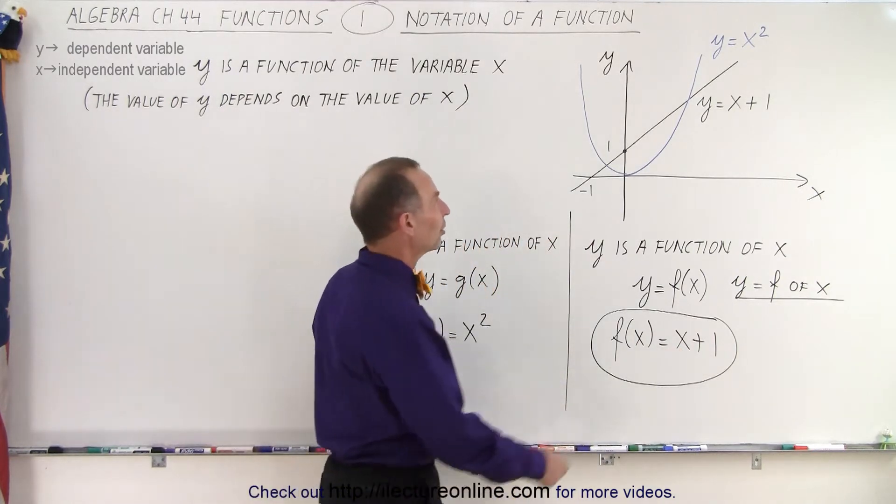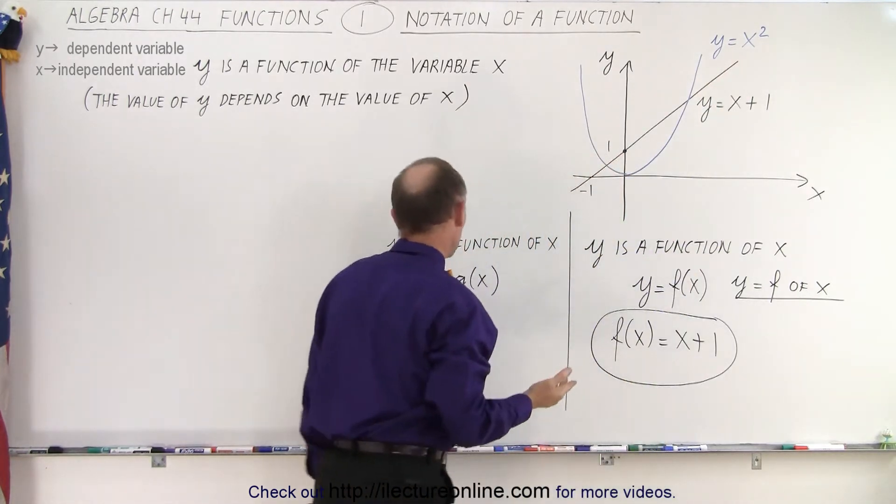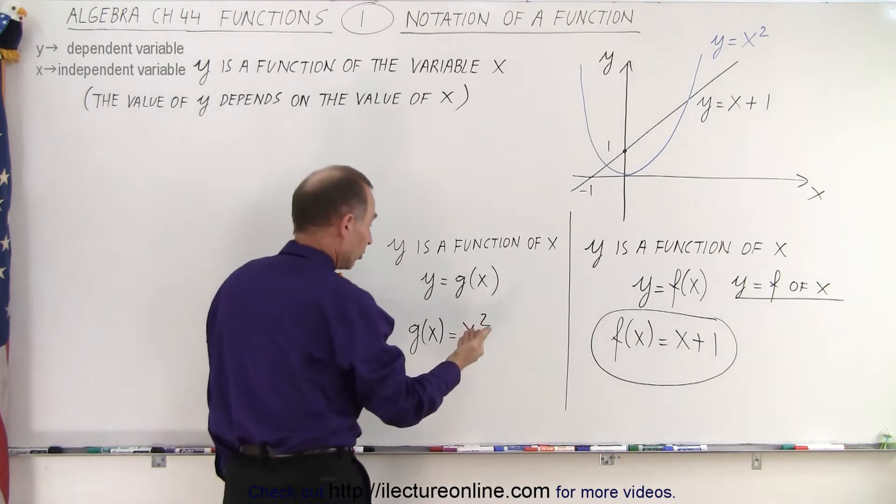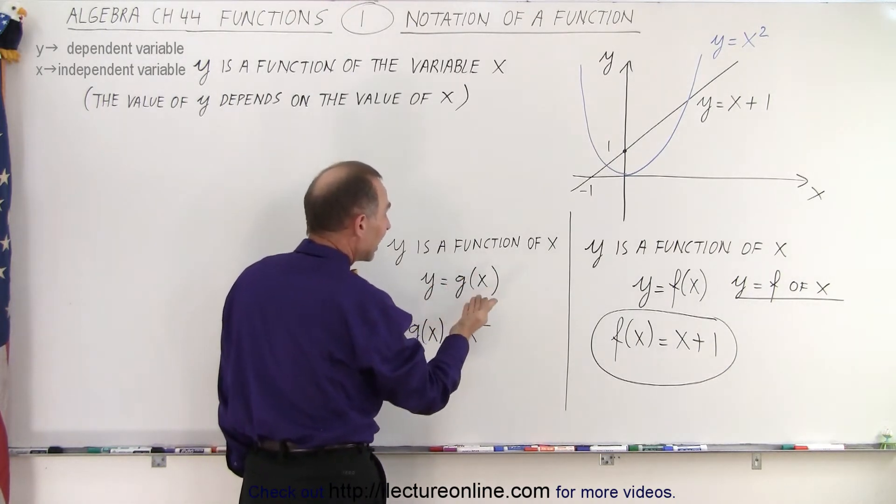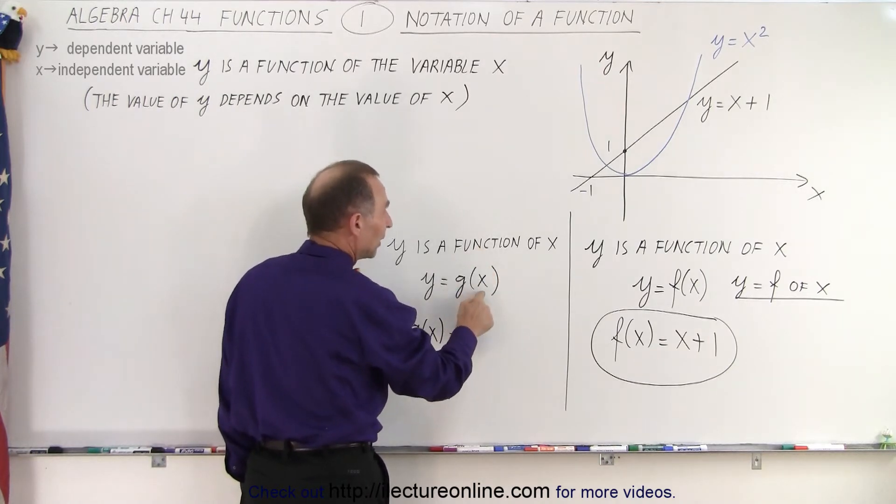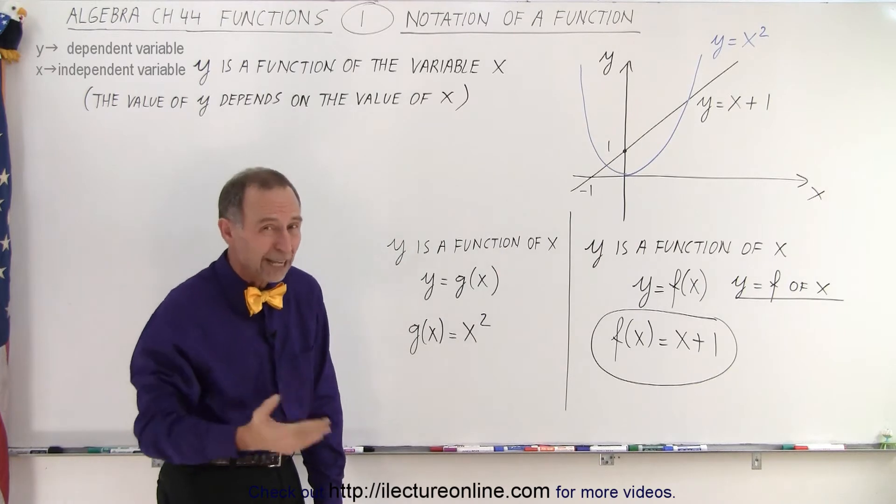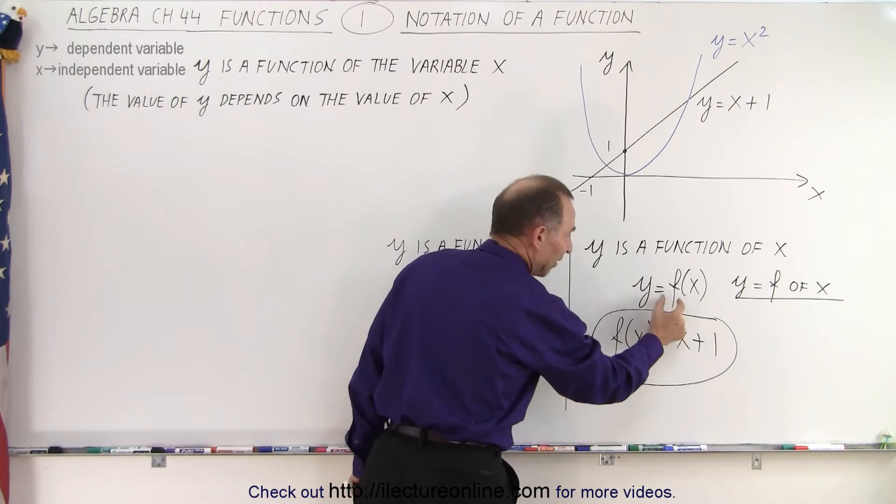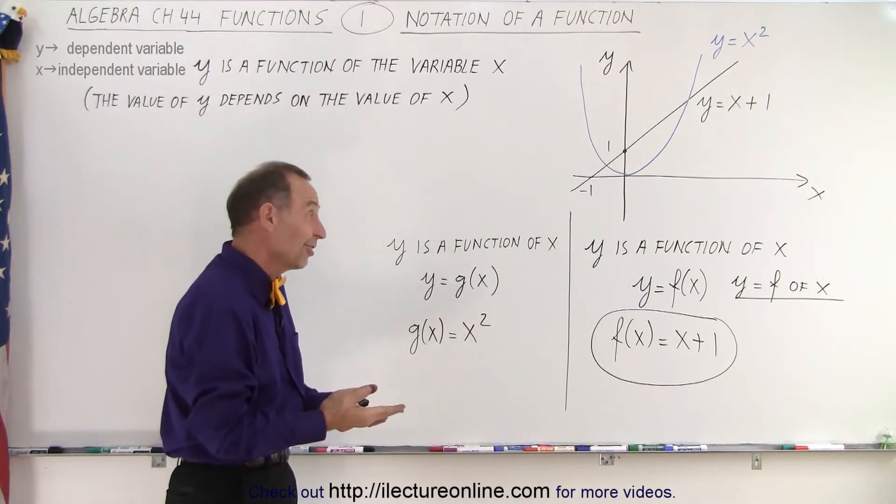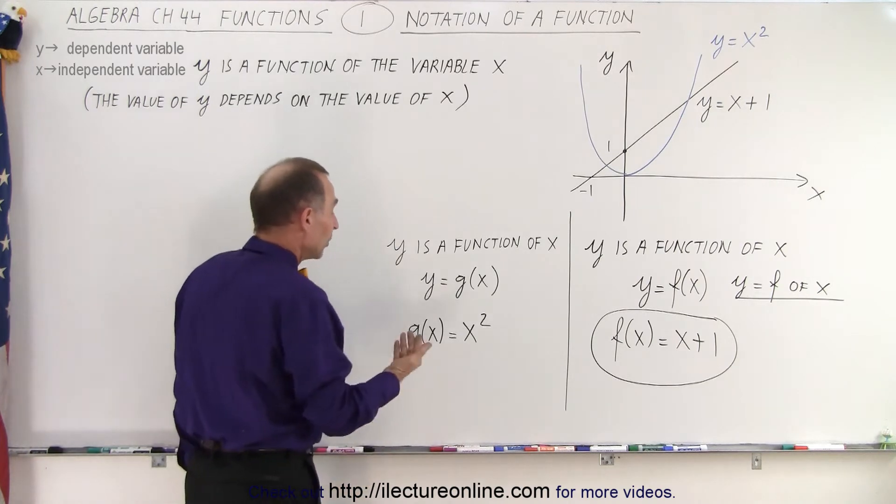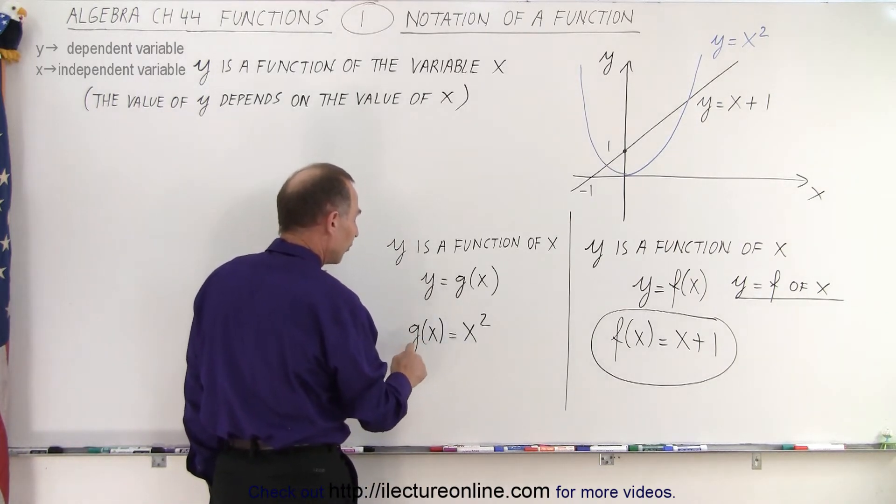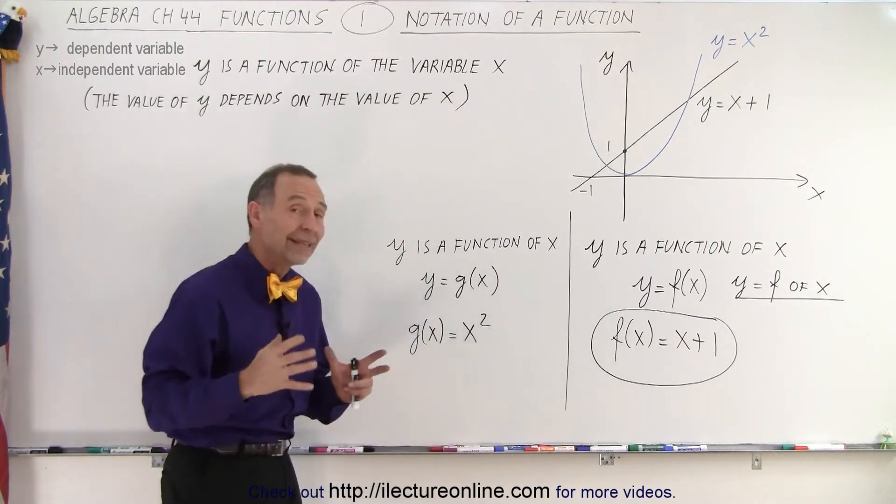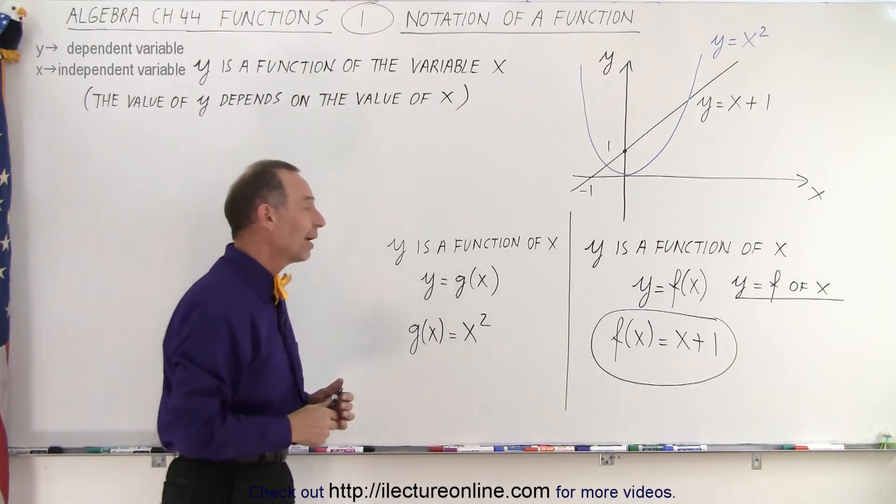Now, of course, we have another function. The other function is y equals x squared. So since y is a function of x, well, we already used the letter f, we can use the next letter g. So y equals g of x. Again, g represents the function of the variable x. It doesn't matter if we use f or g or h or i, doesn't matter, just pick a letter. But we usually use the letter f as being the representative of the function. Obviously, function f, that makes sense. So here we can say that g of x equals x squared. So the function g of the variable x is defined as x squared. And that's how we say that. It's defined as what is on the right side of the equation.